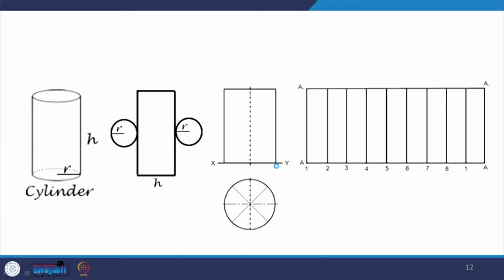For a cylinder, the height h is simply rolled out. The full lateral surface is generated by infinite parallel lines, and at the two ends we add the two circles for the bases.